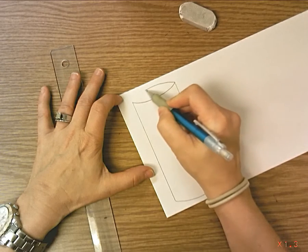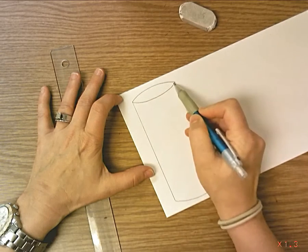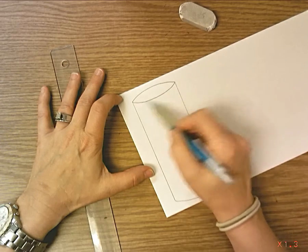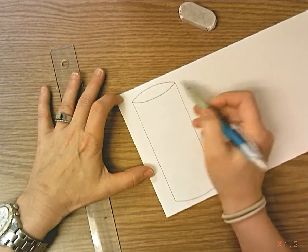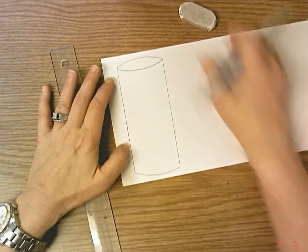So you curve up to get an ellipse shape, a football shape, pointy on each end. If yours is more rounded on each end, that's okay, but more pointy is probably what you're shooting for.